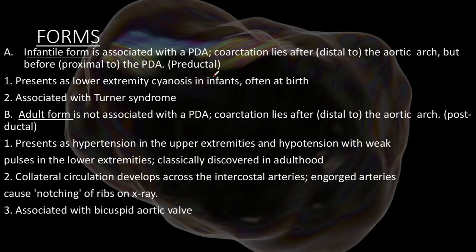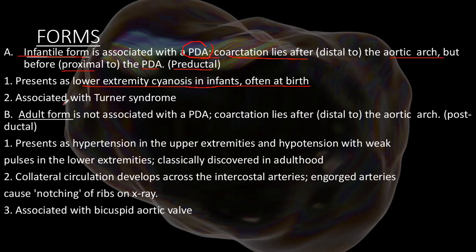Let's look at the forms of aortic coarctation. We have the infantile form, which is associated with a patent ductus arteriosus. In this case the constriction usually lies distal to the aortic arch but proximal to the patent ductus arteriosus — so it is the infantile pre-ductal form. It presents with lower extremity cyanosis in infants, often at birth. There will be a right-to-left shunt because of the patent ductus arteriosus.